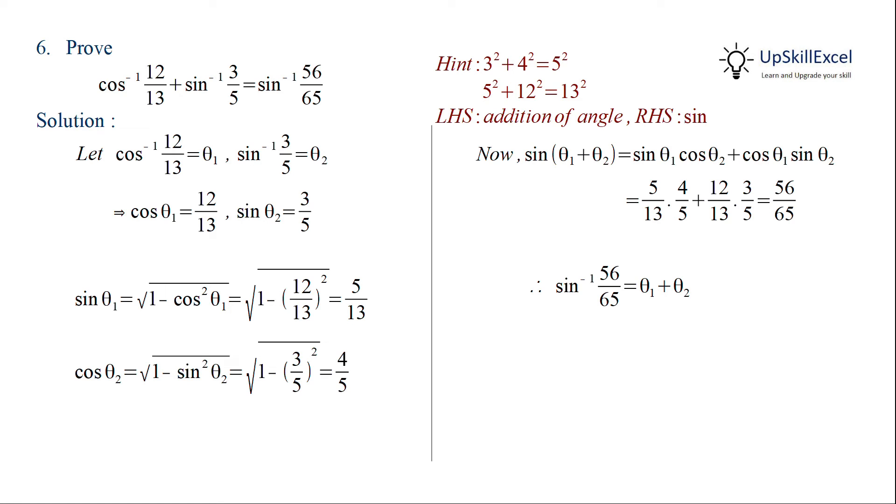We know theta 1 and theta 2 from our assumption. Hence we get sin inverse 56 by 65 is equal to cos inverse 12 by 13 plus sin inverse 3 by 5.